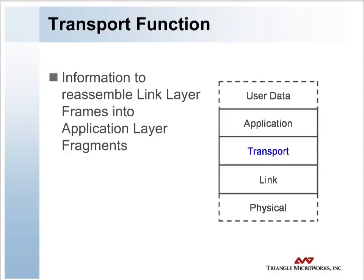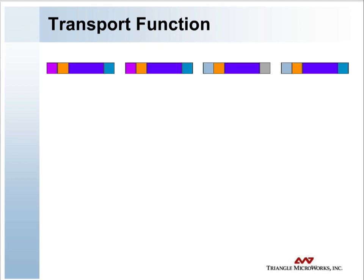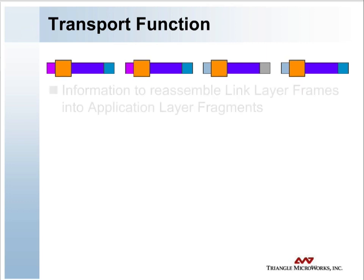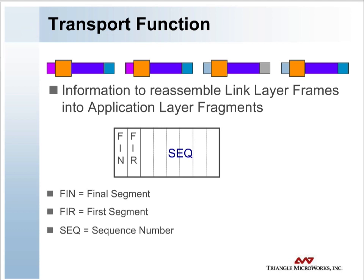The transport function is provided to reassemble link layer frames into application layer fragments. For each frame, the transport function inserts a single byte function code that indicates if the data link frame is the first frame of the message, the last frame of the message, or both the first and the last frame of the message.